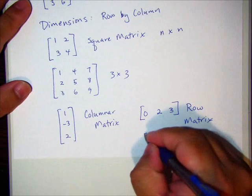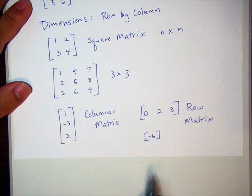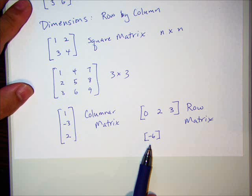So we have this weird one. This is a square matrix because it's one by one. It's a columnar matrix because it has only one column. It's a row matrix because it has only one row.